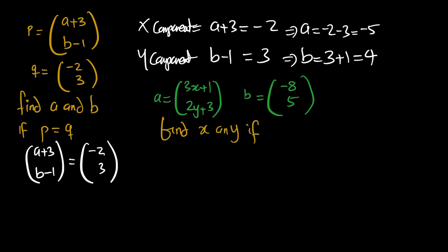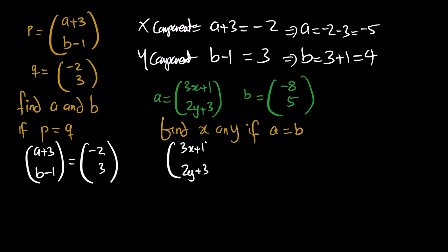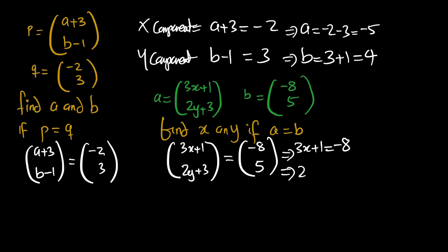Setting them equal: 3x + 1 = negative 8 for the x-components, and 2y + 3 = 5 for the y-components. Because they are the same, the x-component should equal the x-component and the y-component should equal the y-component.